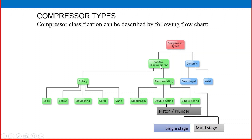Another main classification is positive displacement. In positive displacement, there are two main subdivisions: one is rotary and another one is reciprocating. In reciprocating, there is the diaphragm type compressor. Another type in reciprocating is double acting and single acting, and within those there is a piston and a plunger.